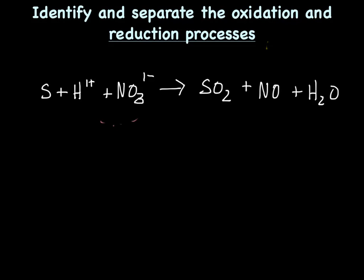Step two is to identify and separate the oxidation and reduction processes. To do that, we need to identify who was oxidized and who was reduced. So let's assign oxidation numbers. Sulfur is a lone atom, so his oxidation number is zero. H1+ is an ion, so his oxidation number is the same as his charge — plus one. Next we have nitrate, which is a polyatomic ion, and we need to take into account the charge, but we still need to assign oxidation numbers to each of the individual atoms in the polyatomic ion.